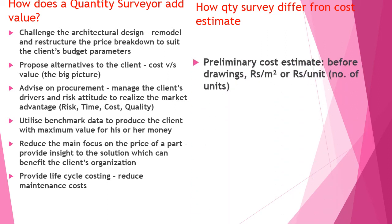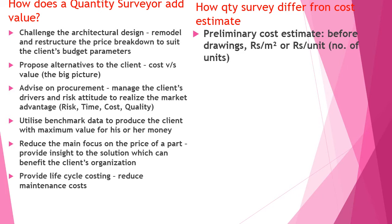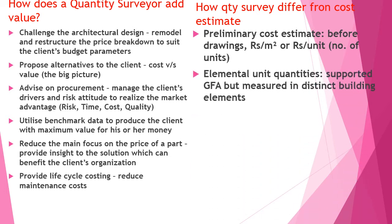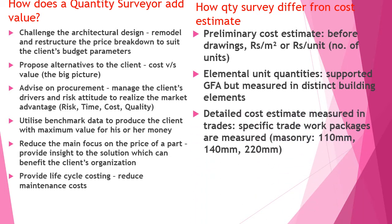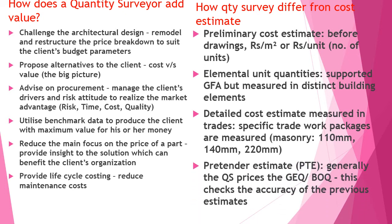Quantities are very different from a cost estimate. A preliminary cost estimate before drawing is expressed as rupees per square metre or rupees per unit. Elemental unit quantities are supported by GFA but measured in distinct building elements. A detailed estimate covers specific trade work packages, measured by masonry types of 110mm, 140mm, 220mm, etc. A pre-tender estimate generally prices the BOQ and checks the accuracy of the previous estimates.